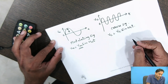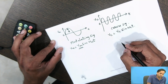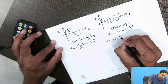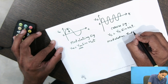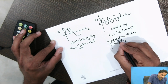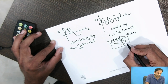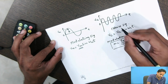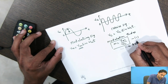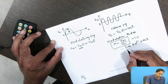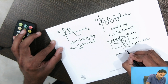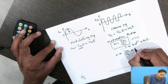Before deriving the equation, we need to understand the modulation index. The modulation index m is defined as Vm divided by Vc — that is, the amplitude of the modulating signal divided by the amplitude of the carrier signal. It lies between 0 and 1. To express it as a percentage, multiply by 100: (Vm/Vc) × 100.